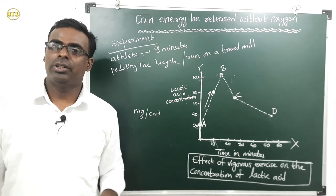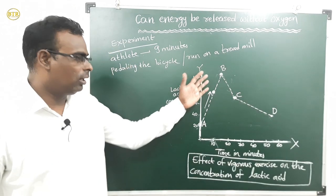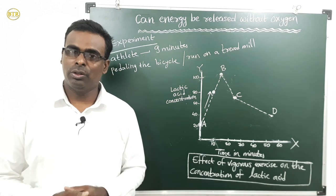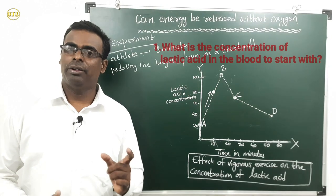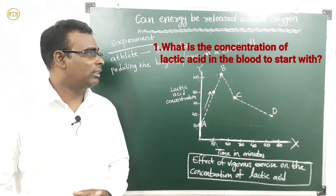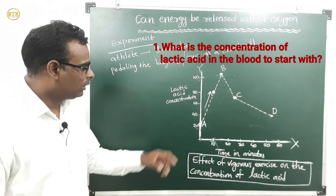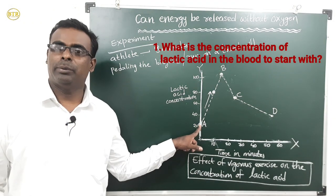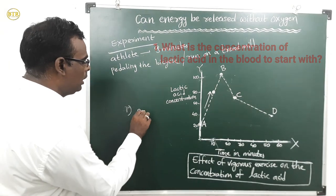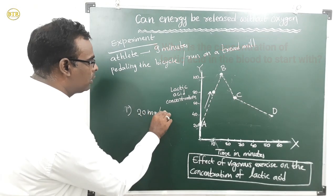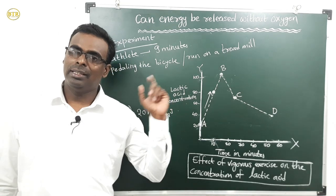There are some questions in the textbook regarding this graph. The first question is: what is the concentration of lactic acid in the blood to start with? That means what is the concentration at the beginning of the experiment. The answer is 20 milligrams per centimeter cube.